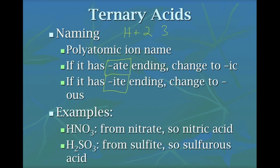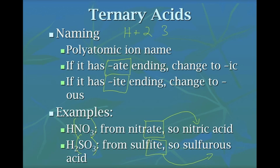For example, hydrogen bonded to NO3: NO3 is nitrate, ending in '-ate,' so we change that to '-ic' and get nitric acid. For H2SO3, hydrogen is bonded to sulfur and oxygen. SO3 is sulfite, ending in '-ite,' so we change '-ite' to '-ous' and get sulfurous acid.